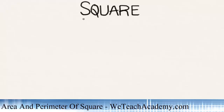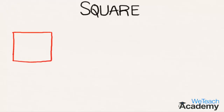Welcome to vteachacademy.com. In this presentation we are going to discuss about square. Here we have a closed geometrical figure in which the length of all the sides are equal. Such a figure is said to be a square.